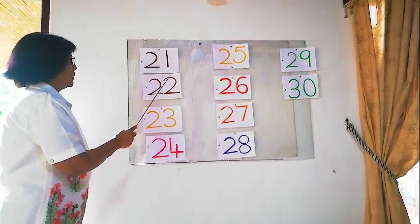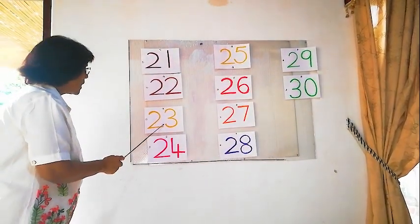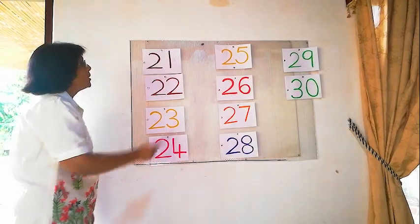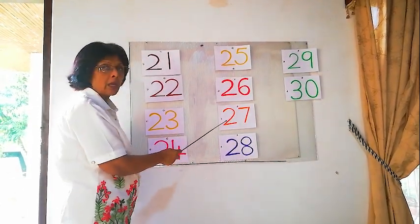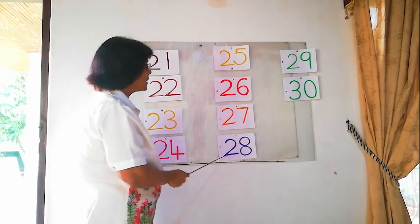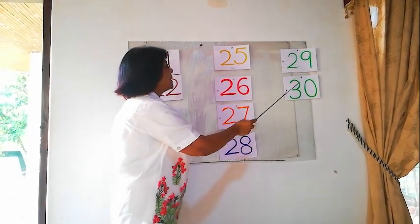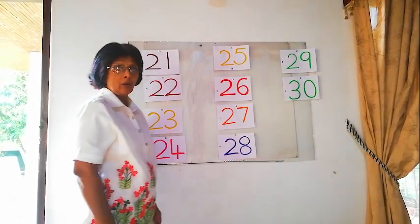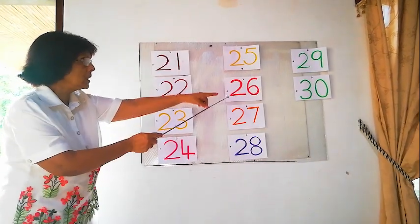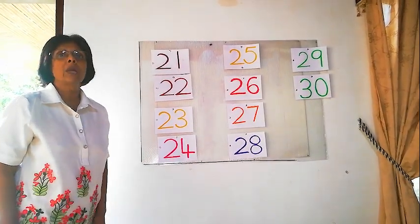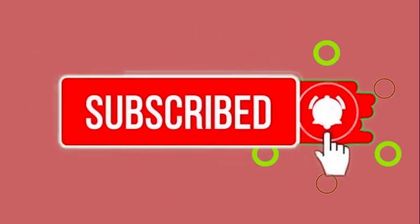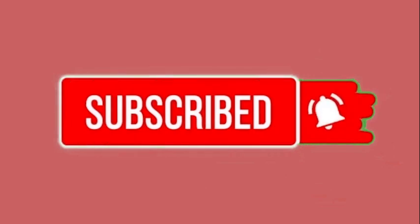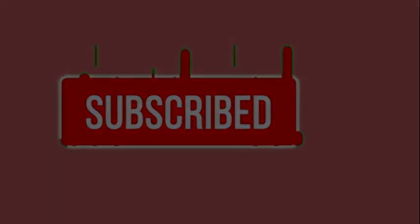Okay? 21, 21, 22, 23, 24, 25, 26, 27, 28, 29, 30. Okay? Now, here, 21 to 30. We found the missing numbers and completed. Okay? Thank you for listening, children. Thank you for listening.